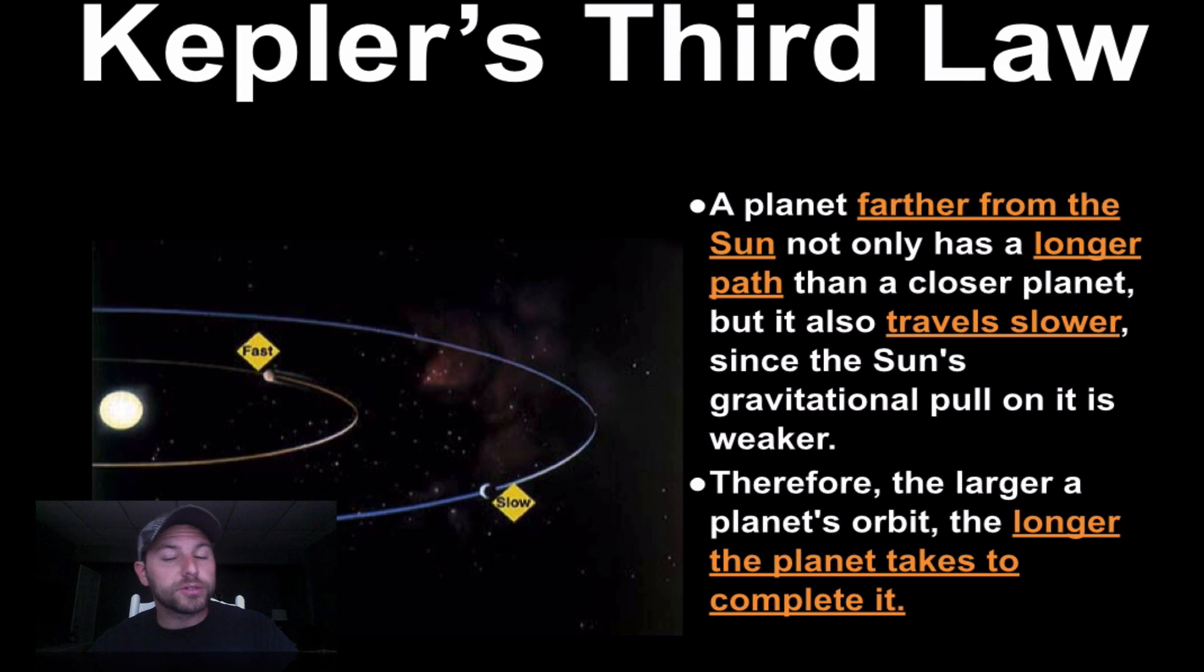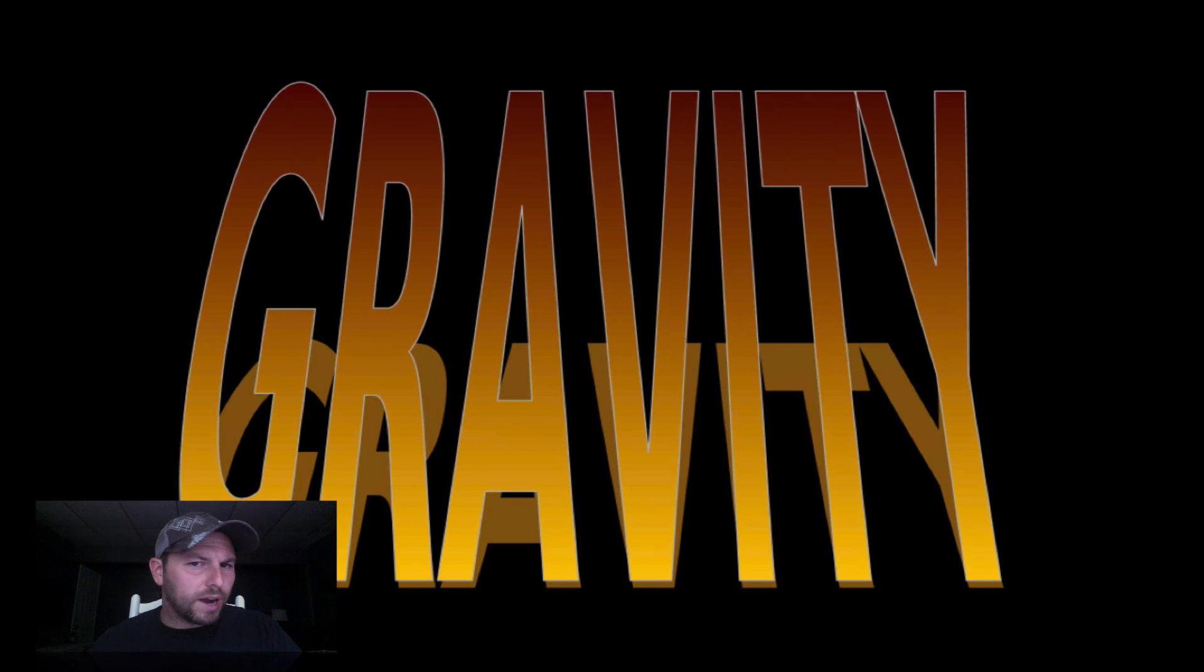And Kepler's third law: a planet farther from the sun not only has a longer path, which we saw in the last time, but it also travels more slowly. This is due to a weaker gravitational pull as we move further away from the center of our solar system, our sun. And that's because of gravity.